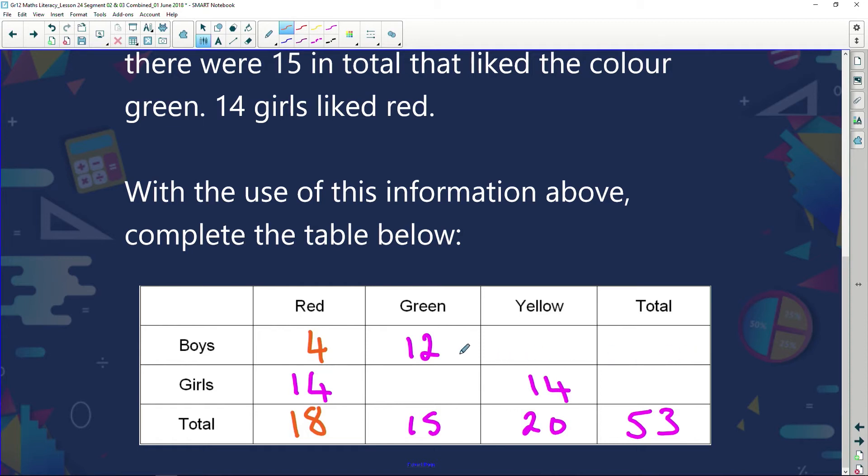I still can't fill in this row. This row I've got two. So let's carry on working with columns. In this column, I've got 12 boys who like green. There are a total of 15, so there must be 3 girls who like the colour green. Yellow: 14 girls out of a total of 20, which means there must be 6 boys that like yellow.